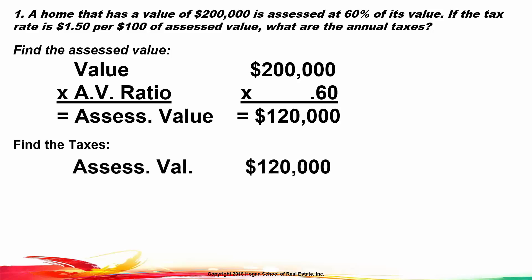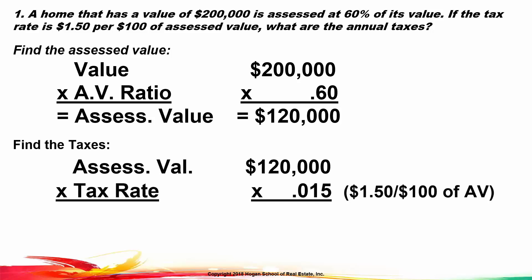To find the taxes, we multiply the assessed value by the tax rate. The tax rate is stated as $1.50 per $100 of assessed value, which is $1.50 divided by 100, or .015.